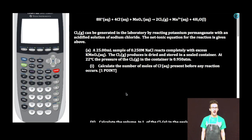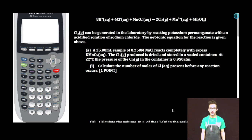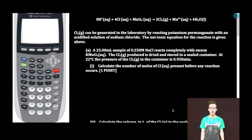Part A. A 25.00 milliliter sample of 0.250 molar sodium chloride reacts completely with excess potassium permanganate. The chlorine gas produced is dried and stored in a sealed container. At 22 degrees Celsius, the pressure of the chlorine gas in the container is 0.950 atmospheres.